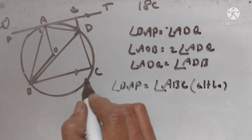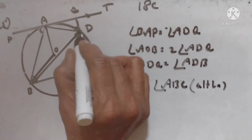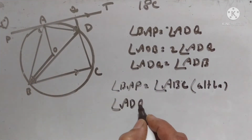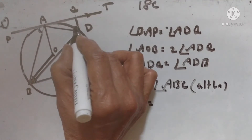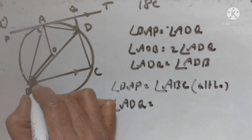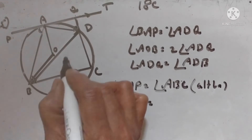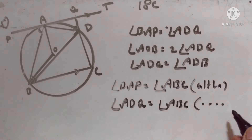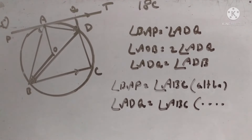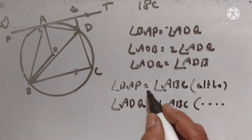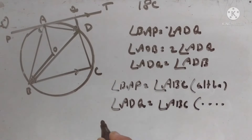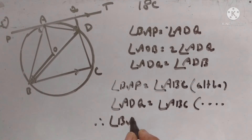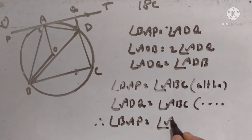Now, ABCD is a cyclic quadrilateral. Angle ADQ is the exterior angle. The exterior angle of a cyclic quadrilateral is equal to the interior opposite angle. Therefore, angle ADQ is equal to angle ABC. Since things which are equal to the same thing are equal to one another, angle BAP is equal to angle ADQ. This is proved.